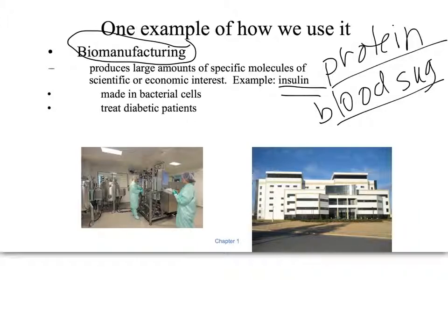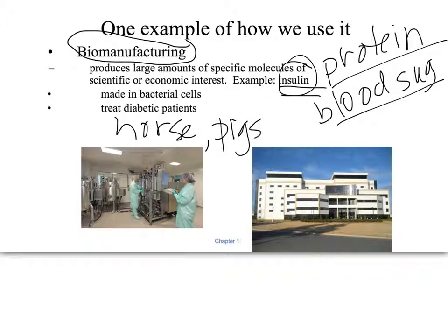People with type 1 diabetes have a pancreas that doesn't produce enough insulin, so they have to inject it. In the past, when we first started understanding diabetes and knew it was something from the pancreas that patients needed, they would take horses and pigs — after butchering them — and extract the insulin from the pancreas.